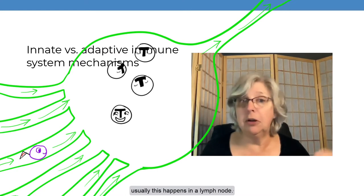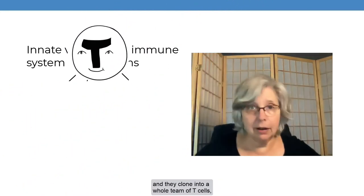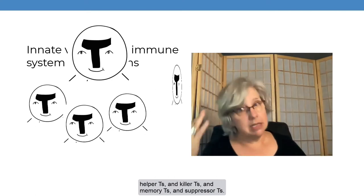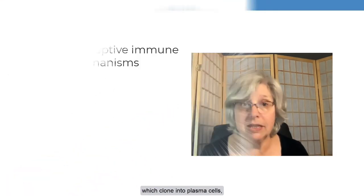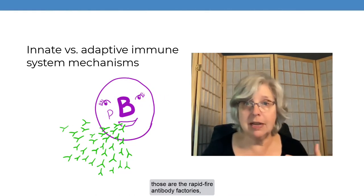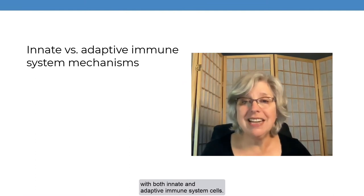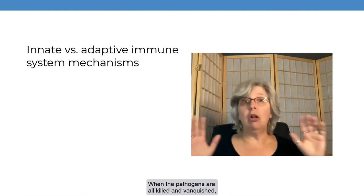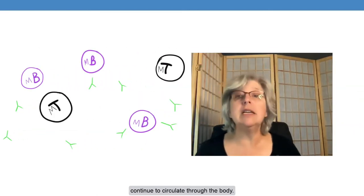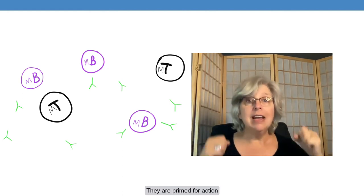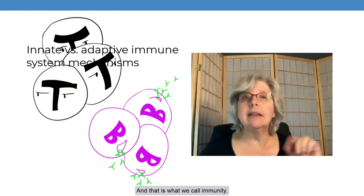Usually this happens in a lymph node, and the exact right T-cells are woken up by this exposure, and they clone into a whole team of T-cells: helper T's, and killer T's, and memory T's, and suppressor T's. The helper T-cells then wake up exactly the right B-cells, which clone into plasma cells — those are the rapid-fire antibody factories — and they also clone into memory B-cells. Battle rages out in the tissues with both innate and adaptive immune system cells. When the pathogens are all killed and vanquished, or at least chased into hiding, then our memory T's and our memory B's continue to circulate through the body. They are primed for action and ready to reenact the whole process if that pathogen ever shows its face again. And that is what we call immunity.